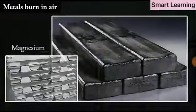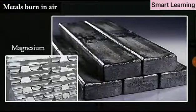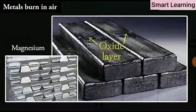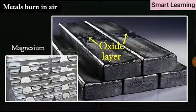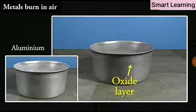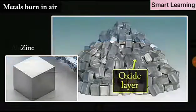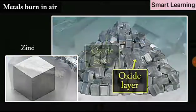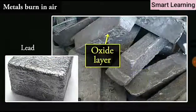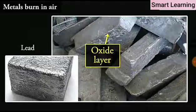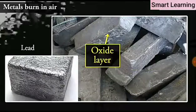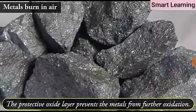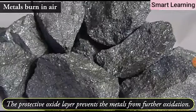At ordinary temperature, the surfaces of metals such as magnesium, aluminum, zinc, lead etc. are covered with a thin layer of oxide. The protective oxide layer prevents the metals from further oxidation.